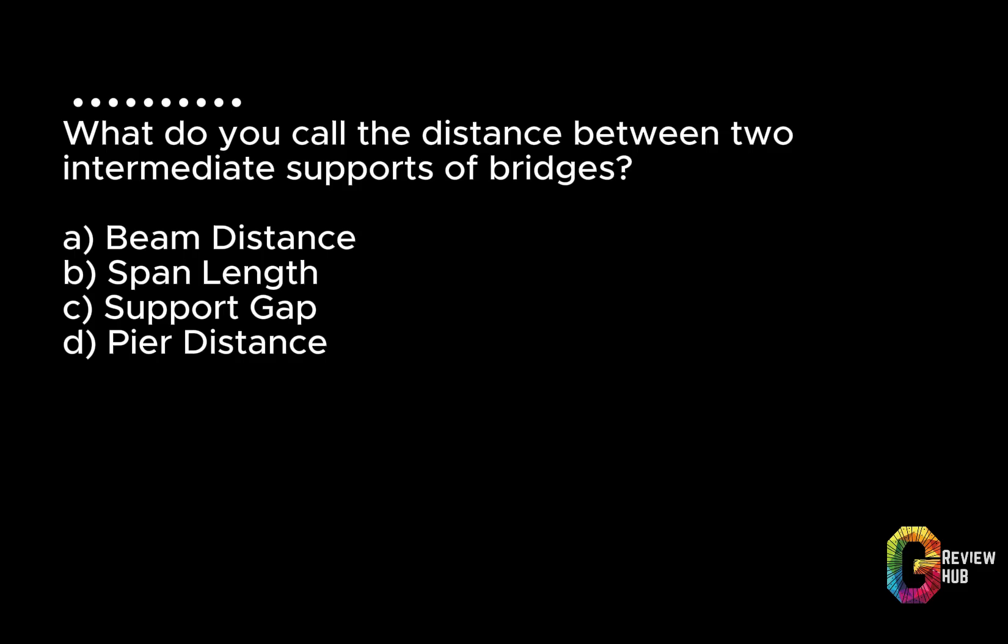What do you call the distance between two intermediate supports of bridges? A. Beam distance. B. Span length. C. Support gap. D. Pier distance. Answer: B. Span length.